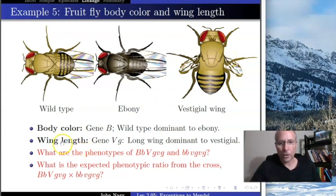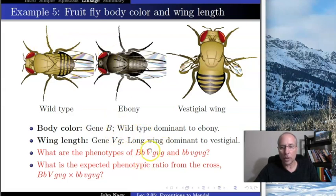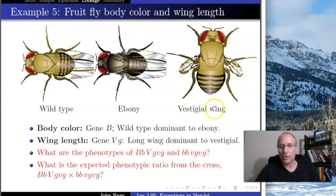What would the phenotypes be for big B little b, big VG little VG and little b little b, little VG little VG? Looking at the Bs first: big B little b — wild type is dominant to ebony, so this individual would be gray. And big VG little VG — long wings are dominant — so this individual is wild type, with gray body and long wings. The second individual, little b little b, is going to be ebony and will also have vestigial wings.